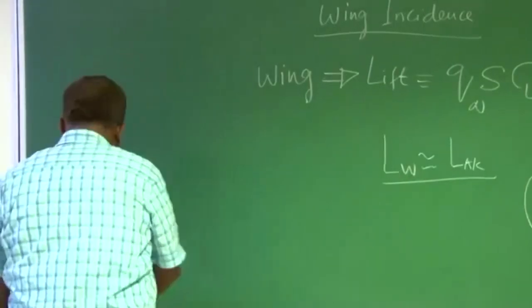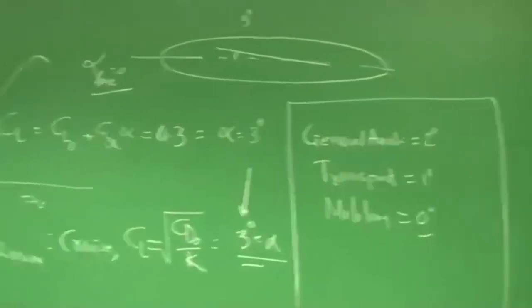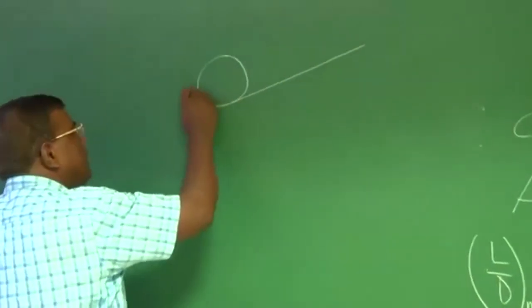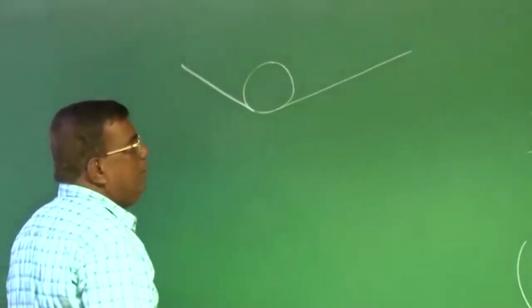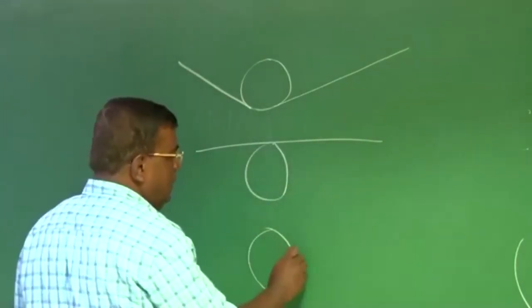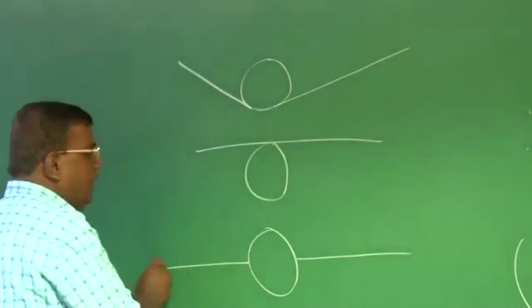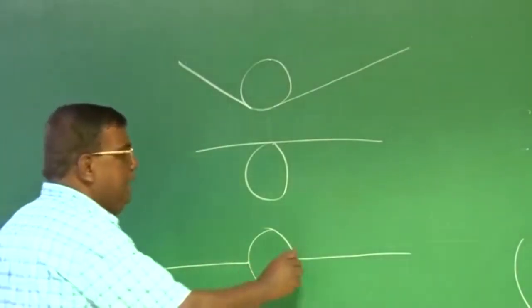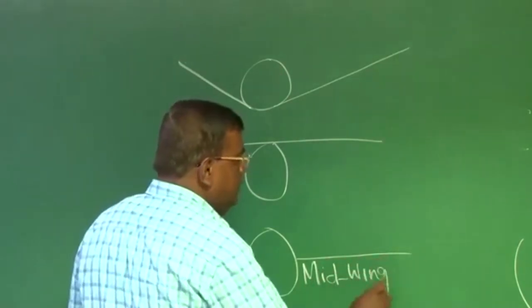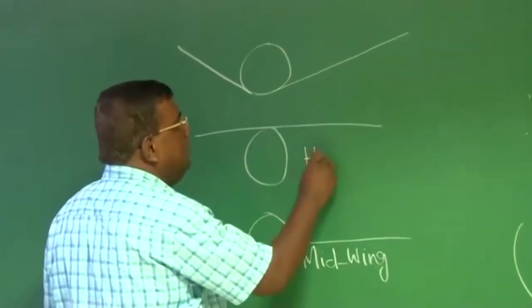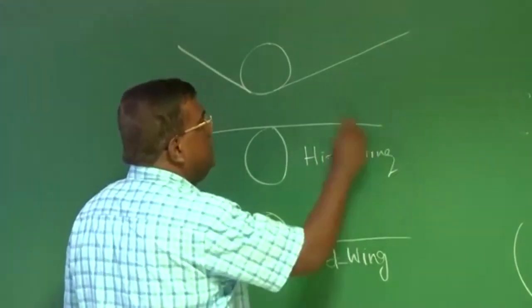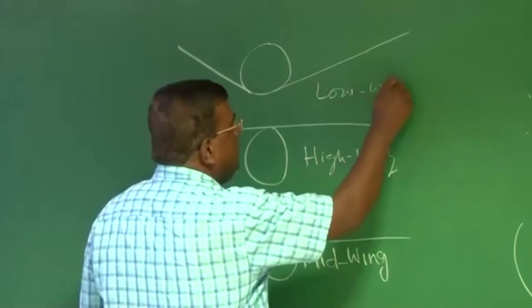Similarly, you will find aircraft having wings located at the bottom, like this, or like this. As you are aware, this is a mid wing configuration, this is high wing configuration, and this is low wing configuration.